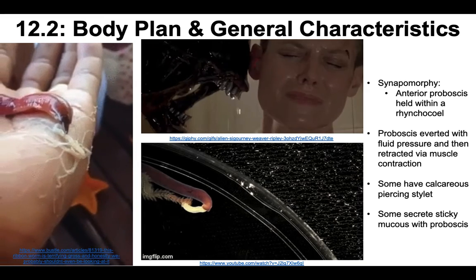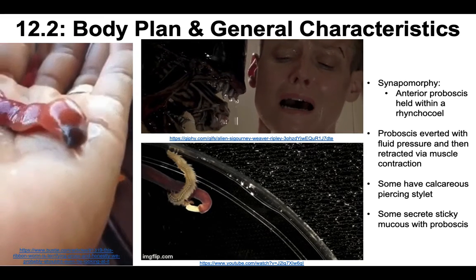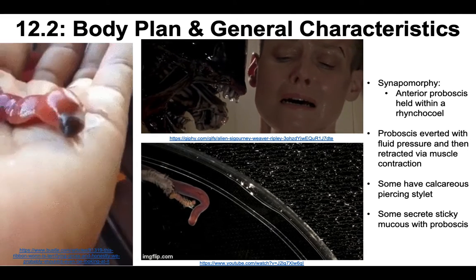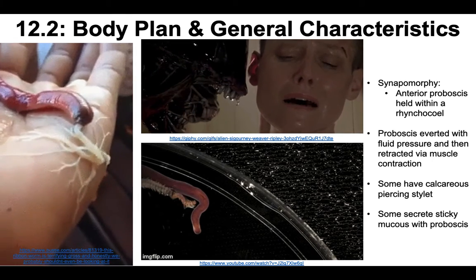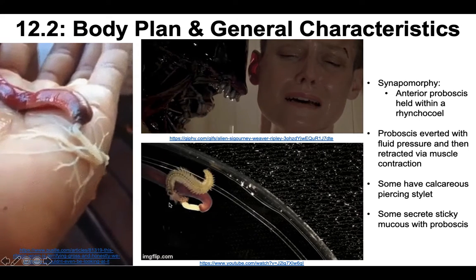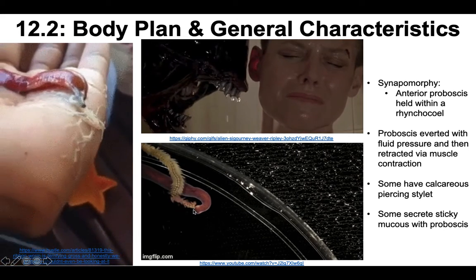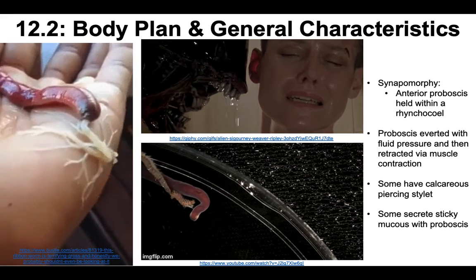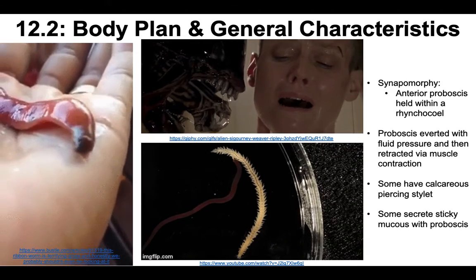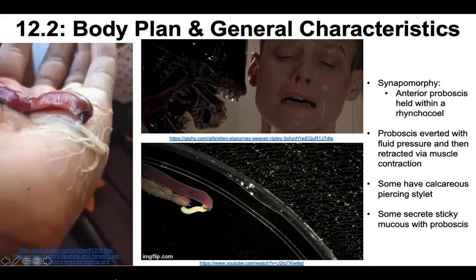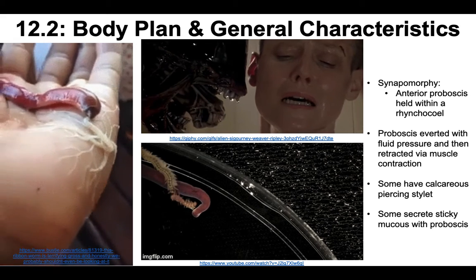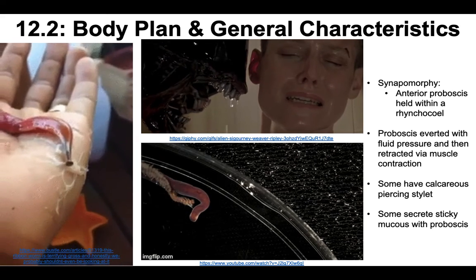They have a real creepy nightmare tongue. Their proboscis is everted using fluid pressure — like if you were to fill a rubber glove with water and all the projections blow out, that's basically what's happening. Then when they want to retract it, they use muscle contractions to pull their tongue back in.